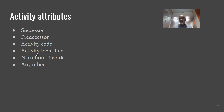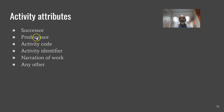Most scheduling software packages allow us to define activity attributes. If you have used MS Project, right-clicking on an activity brings up a pop-up window that allows you to define and enter the activity attributes for every activity in the schedule.